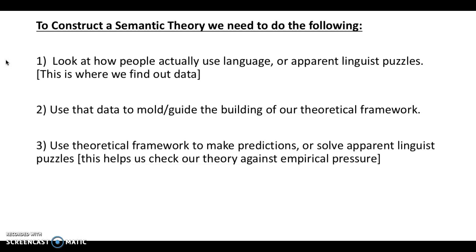How do we know whether the theories or models we construct are correct? We look at how people actually use language, or we look at apparent linguistic puzzles that arise from language use. We use this data as building blocks to create a framework that answers those puzzles or makes correct predictions about language use. Philosophers of language aren't making up theories out of thin air — we look at how people use language and try to explain that phenomenon. A good theory must solve linguistic puzzles and be consistent with how we expect people to use language.